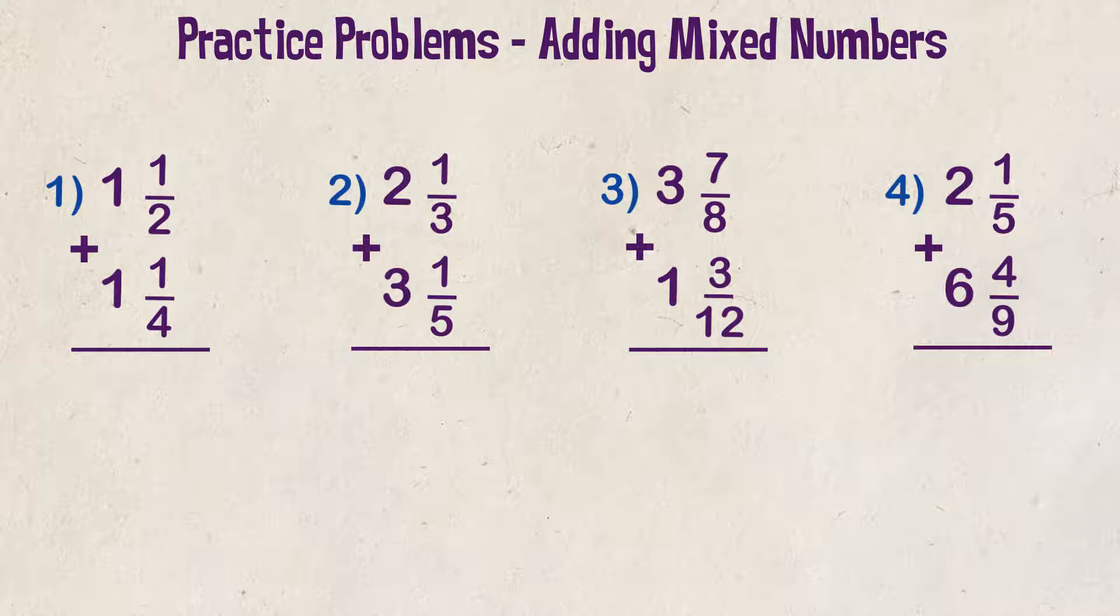Example one: one and a half plus one and a fourth. We line them up vertically and notice right off the bat that our proper fractions have different denominators. The first thing we want to do is get them to be the same. We can tell that four would be the common denominator as it's both a multiple of two and four. We can convert one half into two fourths and now we can add our proper fraction portion. Two plus one is equal to three. That number goes over the denominator of four. Then we can add the whole numbers of one plus one and we get two. Two and three fourths is our answer.